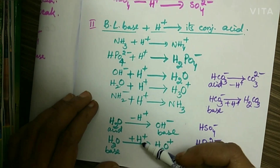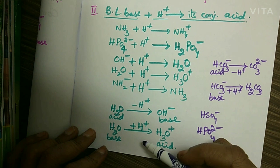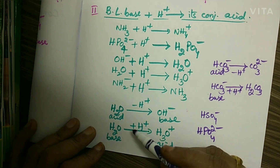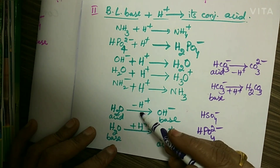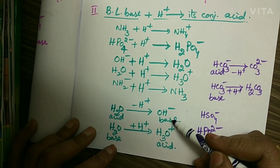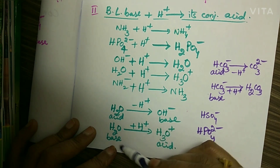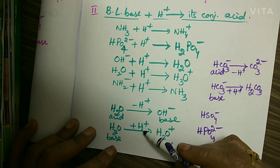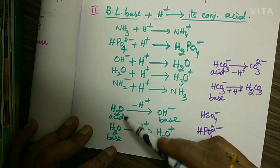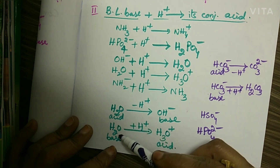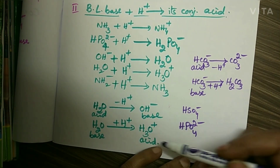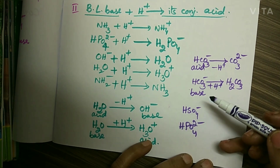Some species can act as both Bronsted-Lowry acids and Bronsted-Lowry bases. For example, water — by losing a proton it forms OH⁻ ion, so water is acting as an acid. When water acts as a base by accepting a proton, it forms hydronium ion H3O⁺. So water acts as an acid in the first case and as a base in the second case.